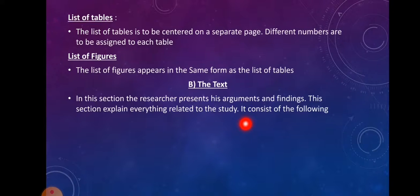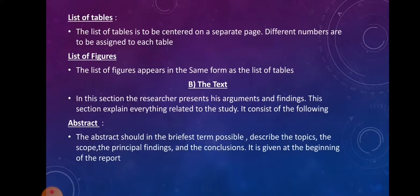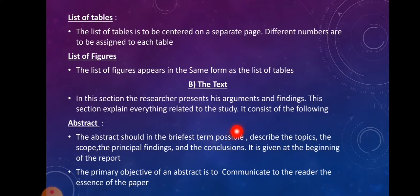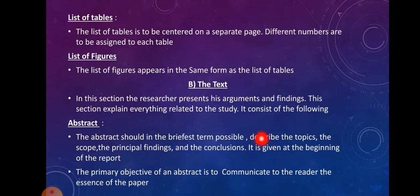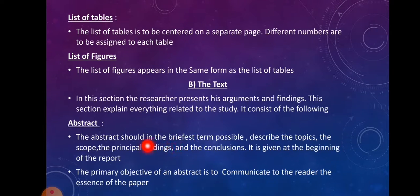In this section, there are abstracts. In the description, there are some abstracts — describing the topics and the topic, how we describe the topic, the scope, the principal findings, and the conclusions and results. It is given at the beginning of the report to communicate to the reader the essence of the paper.